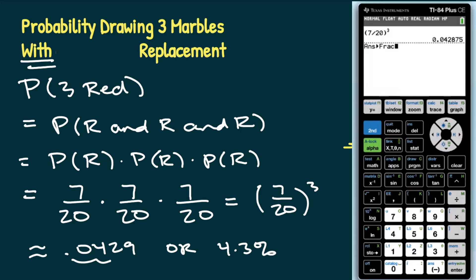It just said, 'You want your answer as a fraction?' And I do. I hit enter and it gives me 343 out of 8,000. So I can also write this as 343 out of 8,000.